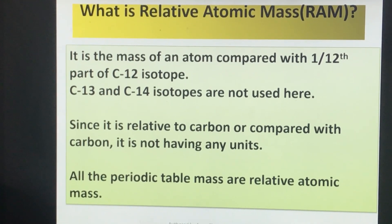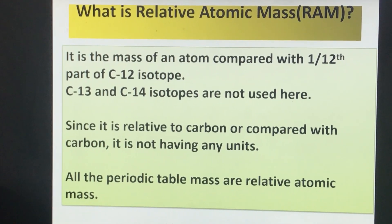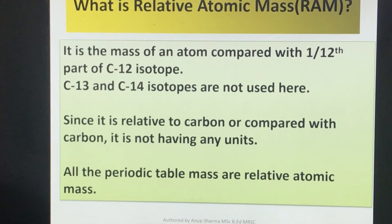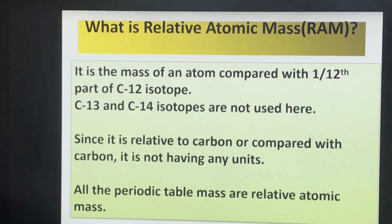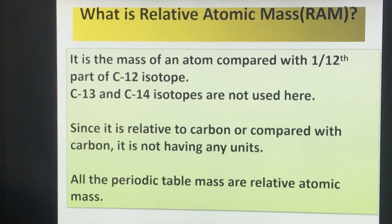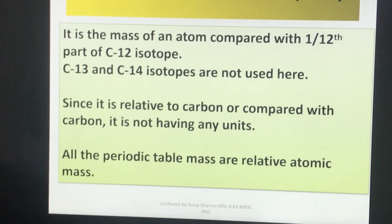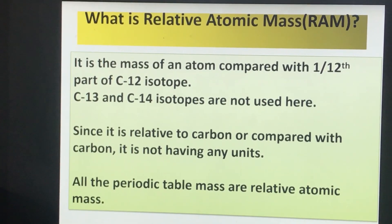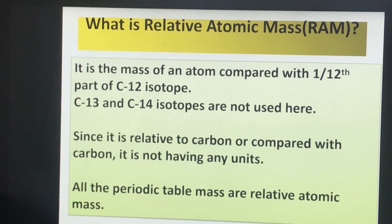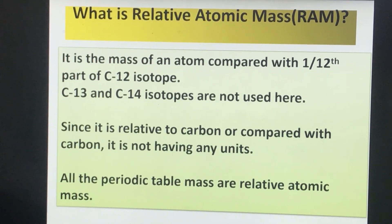Carbon-12 has 12 atomic mass or mass number which has 6 protons and 6 neutrons, whereas carbon-13 has 6 protons and 7 neutrons, whereas carbon-14 has 6 protons and 8 neutrons. That is the difference. For the purpose of deciding the relative atomic mass, we use carbon-12 isotope.